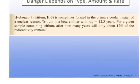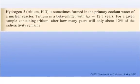Here's an example problem. Hydrogen-3, also called tritium, is sometimes formed in the primary coolant water of a nuclear reactor. Tritium is a beta emitter with a half-life of 12.3 years. For a given sample containing tritium, after how many years will only about 12% of the radioactivity remain?